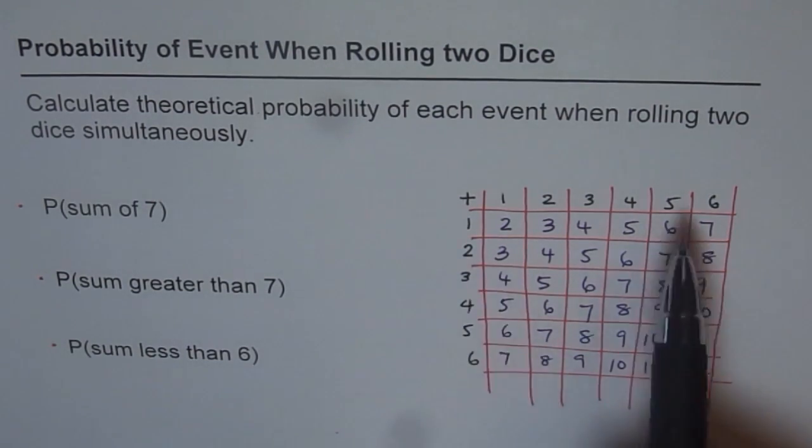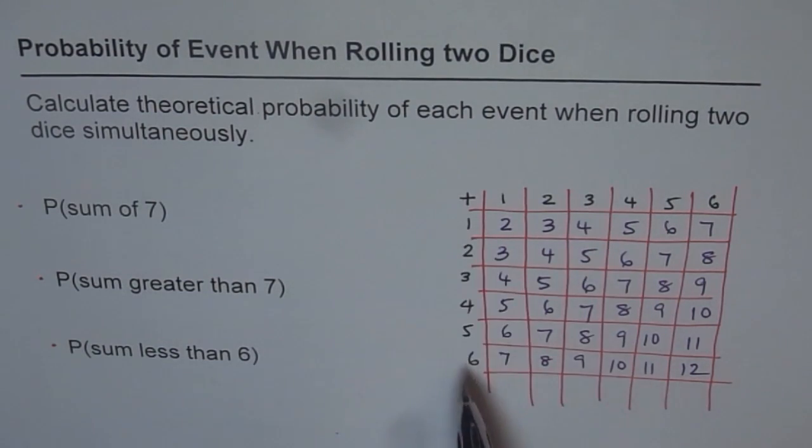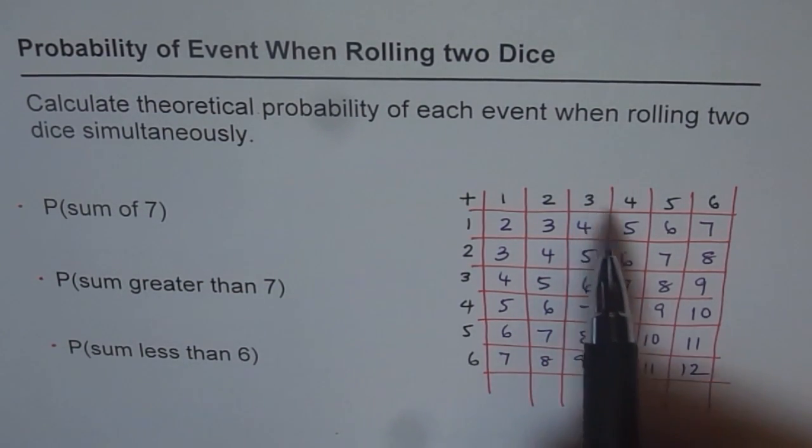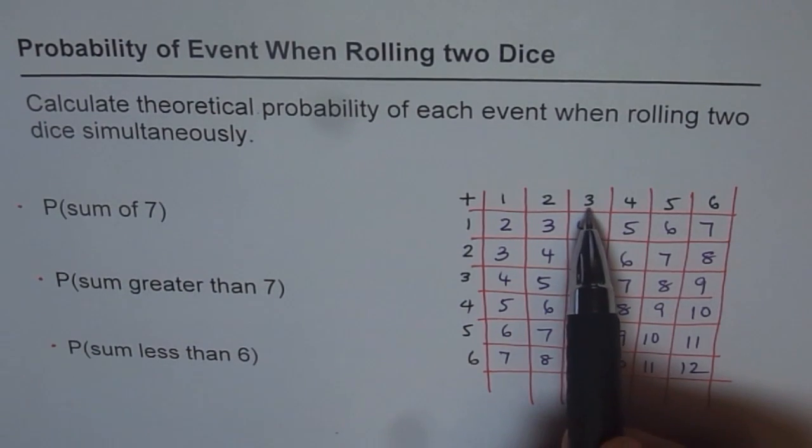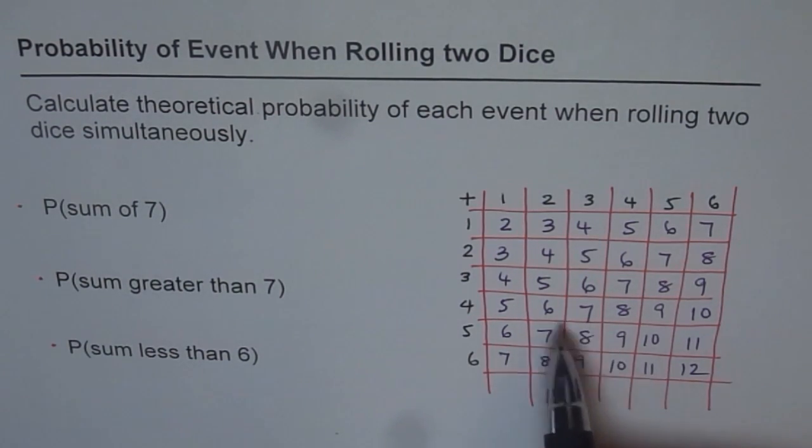So when you add the combination of roll from the first die and the other die, the total is given here in the center. For example, if you roll a three from the first and a four from the second, their sum is seven. That is how we have to see and observe this.